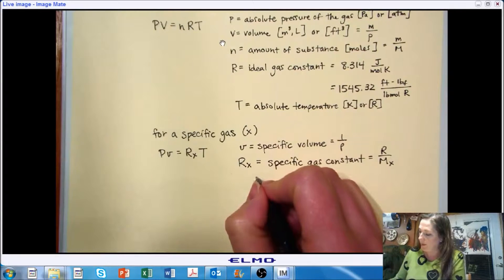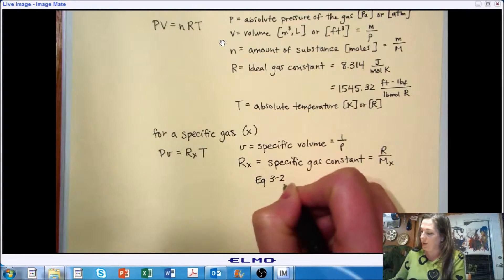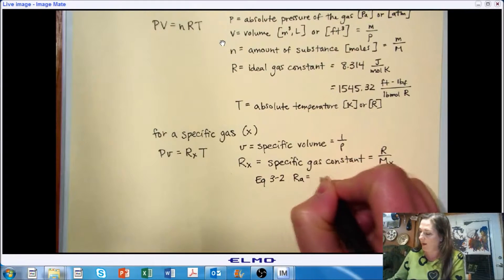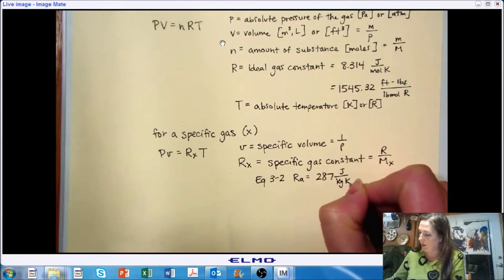And a couple of examples that are given in your text are shown in equation 3.2, which is the specific gas constant for air, which works out to be 287 joules per kilogram Kelvin.